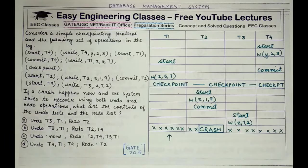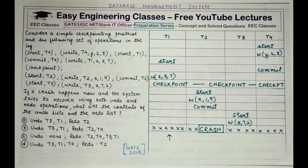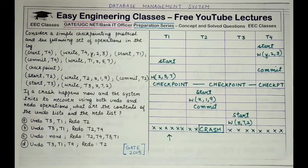Whereas all those transactions that started and performed a commit or an abort are put in the redo list. Why redo? Because all such transactions completed to their entirety, and we have to perform those operations again — redo these completed transactions when a crash happens — so that we can restore the database to its correct form.